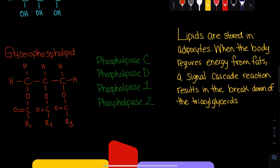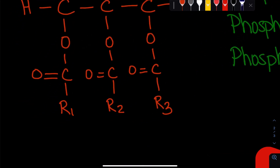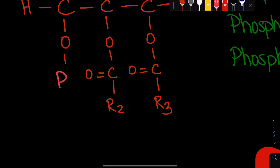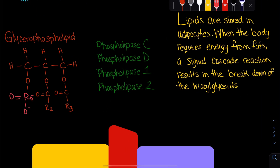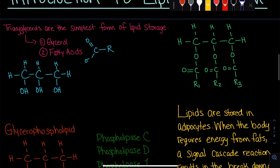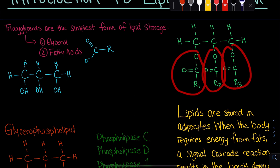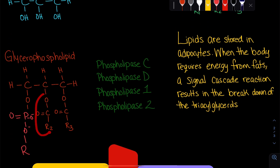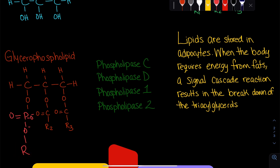We also have glycerophospholipids, in which instead of three fatty acids, we have two fatty acids on the glycerol, and on the third carbon of glycerol we have a phosphate group with a head group. That R group represents whatever head group is attached to that phosphate.